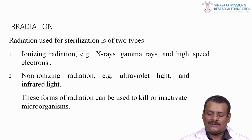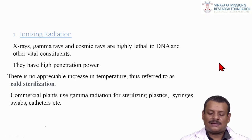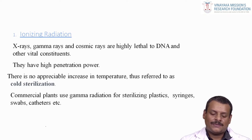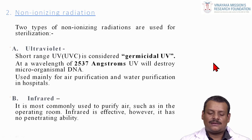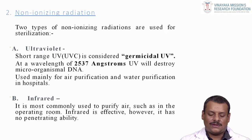These forms of radiation are used to kill or inactivate microorganisms. Ionizing radiations — X-rays, gamma rays and cosmic rays — are highly lethal to DNA and other vital constituents, with high penetration power. There is no appreciable increase in temperature, so it is referred to as cold sterilization. Commercial plants use gamma radiation for sterilizing plastics, syringes, swabs and catheters. For non-ionizing radiation, UV light is germicidal at a wavelength of 2537 angstroms, which destroys microorganism DNA, and is used for air and water purification in hospitals. Infrared is used to purify air in operating rooms but has no penetrating ability.